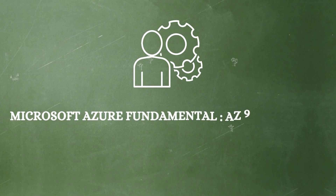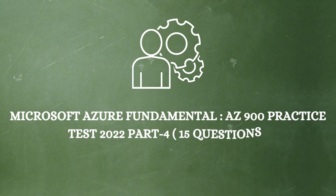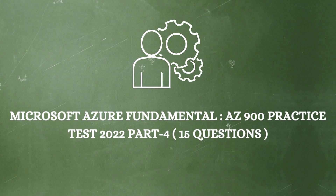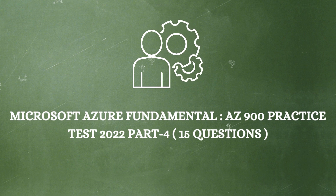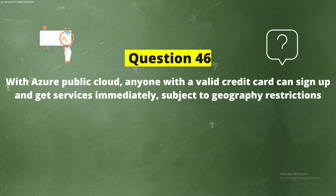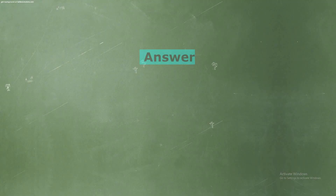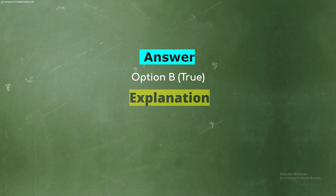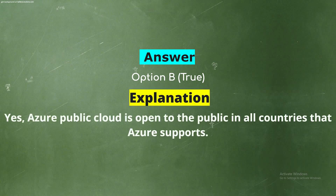Welcome to our brand new Microsoft Azure Fundamentals AZ-900 practice questions 2022. In this video we are going to discuss all the practice questions of the Microsoft AZ-900 exam. I'm your host Nithu Rai from Up Degree. Question 46: With Azure public cloud, anyone with a valid credit card can sign up and get services immediately, subject to geography restrictions. The correct answer is Option B, True. Azure public cloud is open to the public in all countries that Azure supports.